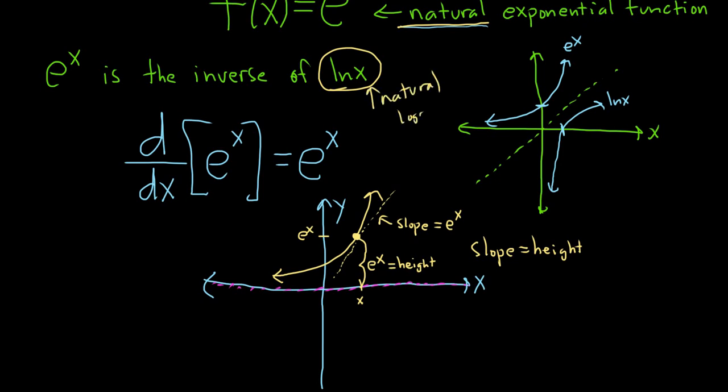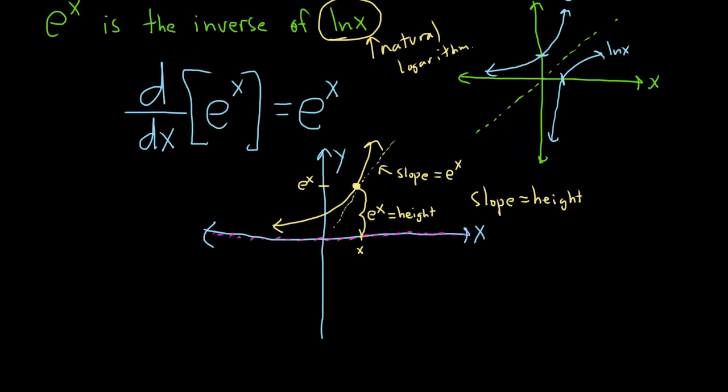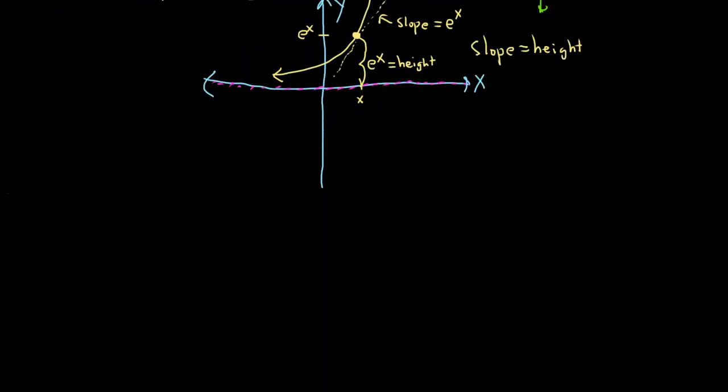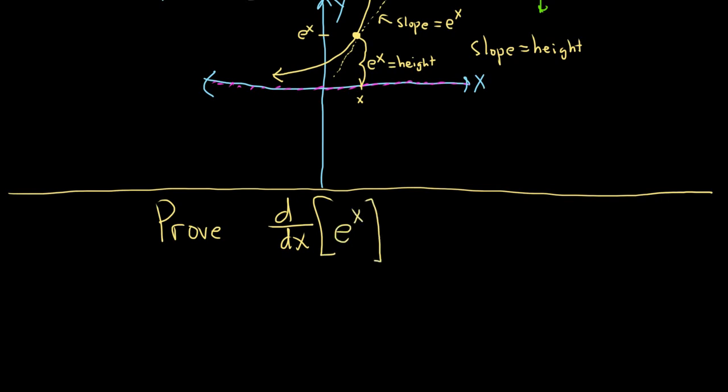Let's finish this video with a quick proof of the derivative of e to the x, just so you see. Probably one of the most, if not the most important function in all of mathematics. Let's prove that the derivative of e to the x is equal to e to the x. What an amazing function. So we'll start by calling y equal to e to the x. And we have to find dy dx.